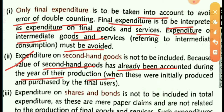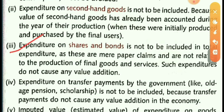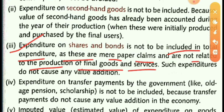Third precaution: expenditure on shares and bonds is not to be included in total expenditure, as these are mere paper claims and are not related to the production of final goods and services. Such expenditures do not cause any value addition in the economy.